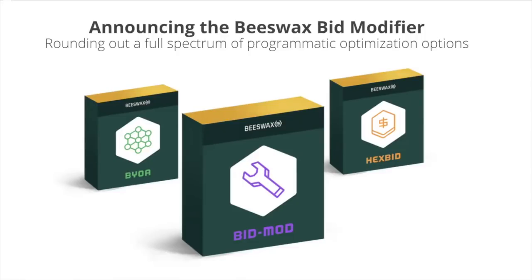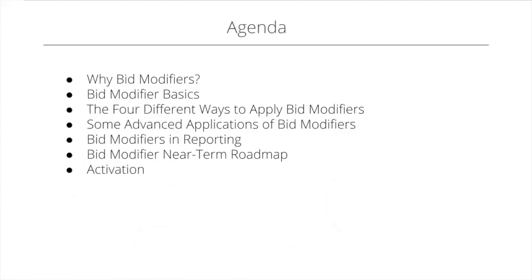My name is Shamim Samadhi, chief of product and co-founder. Really excited to go through our recent launch of bid modifiers — the product is now open for customers to use. Quick agenda: I'll talk through the motivation behind why we built the feature, go through the basics including four different ways to apply bid modifiers, advanced applications, reporting, roadmap, and lastly how you can activate it today.